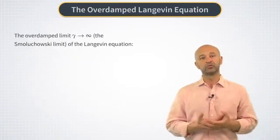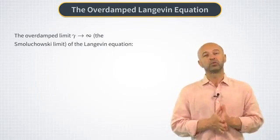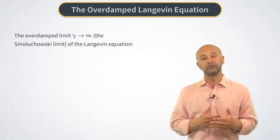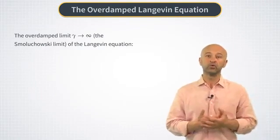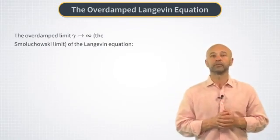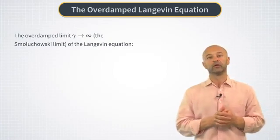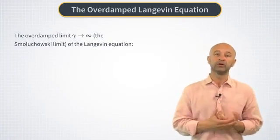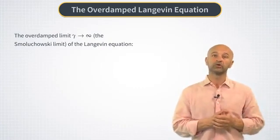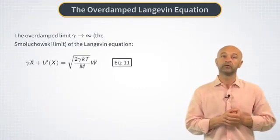And in many cases, it's useful to consider a limit of the Langevin equation that is obtained if we take the dissipation coefficient gamma to be very large. This limit is called overdamped Brownian motion, or the Smolukowski limit. And it turns out that in this limit, the original Langevin equation becomes the overdamped Langevin equation, shown here in equation 11.